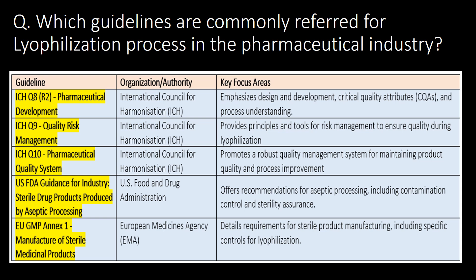Which guidelines are commonly referred to for the lyophilization process in the pharmaceutical industry? ICH Q8R2, ICH Q9, ICH Q10, US FDA guidance for industry, and EU GMP Annex 1 are the commonly referred guidelines for the lyophilization process in the pharmaceutical industry.